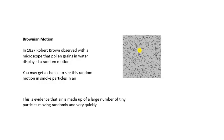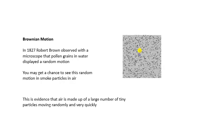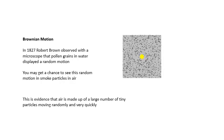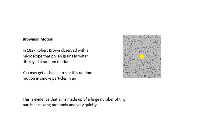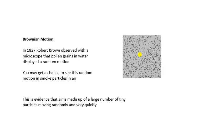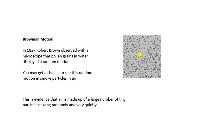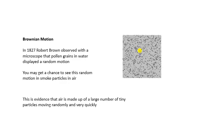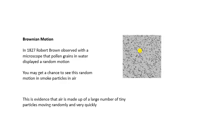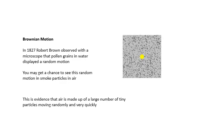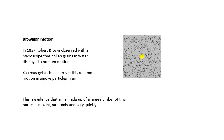In 1827, this Scottish guy Robert Brown, with his microscope, was looking at pollen grains in water. He saw that the pollen grains were jiggling about — they were disco dancing. And he didn't understand why; he couldn't explain it, or at least he didn't explain it correctly.